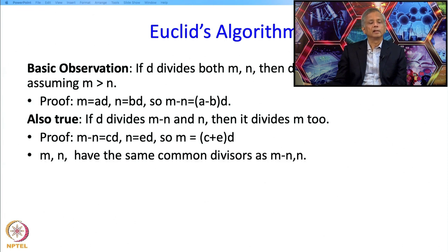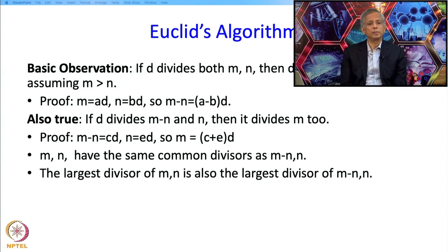So together what does it mean? It means that whatever divisors m and n have, m-n and n also have. So if D is a common divisor of m, n, it is a common divisor of m-n as well. So it means that the largest divisor of m, n is also the largest divisor of m-n, n.